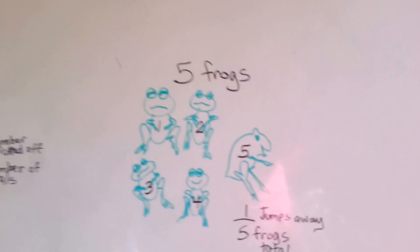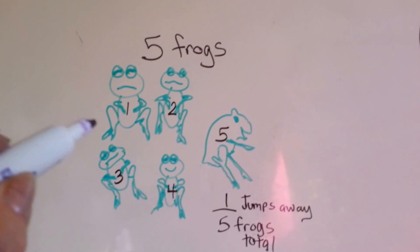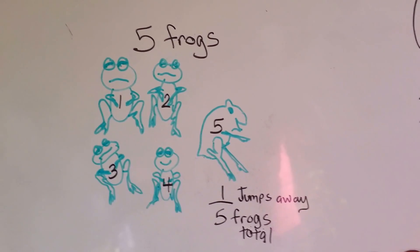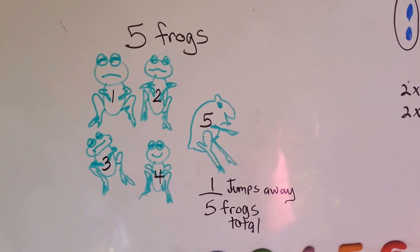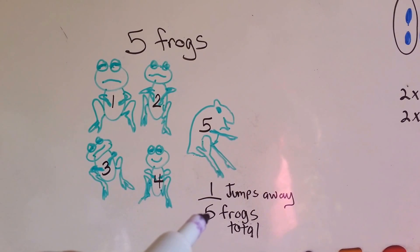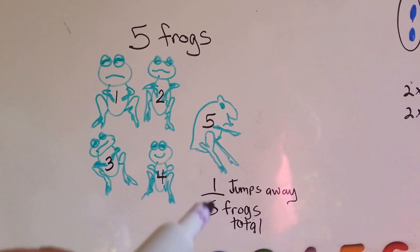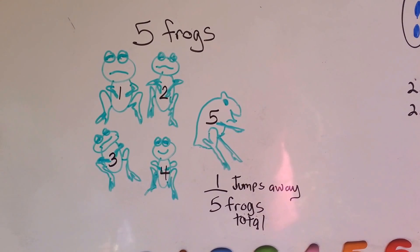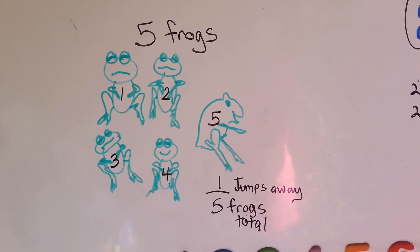Okay, let's look at this. We've got five frogs. One, two, three, four, five. If one jumps away, then one jumped away out of five frogs total, one-fifth has jumped away. One of the five.